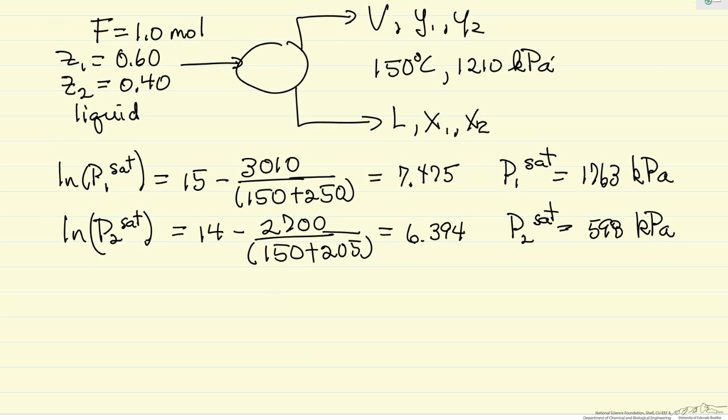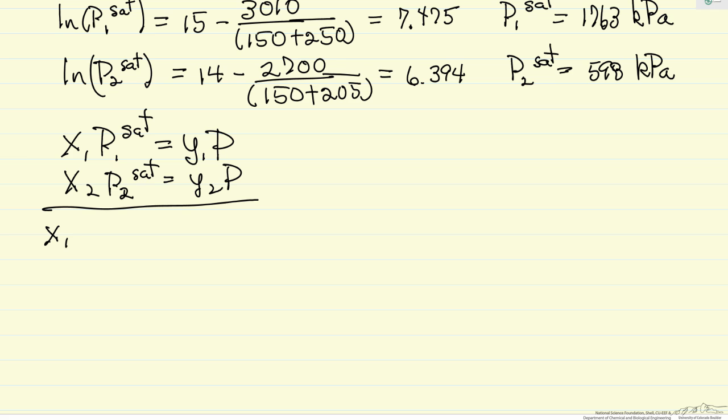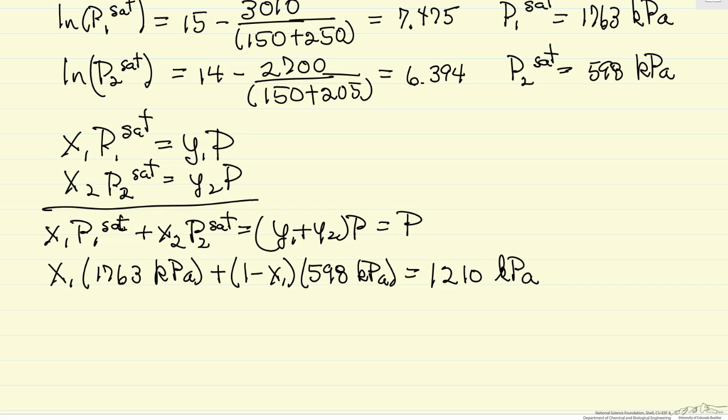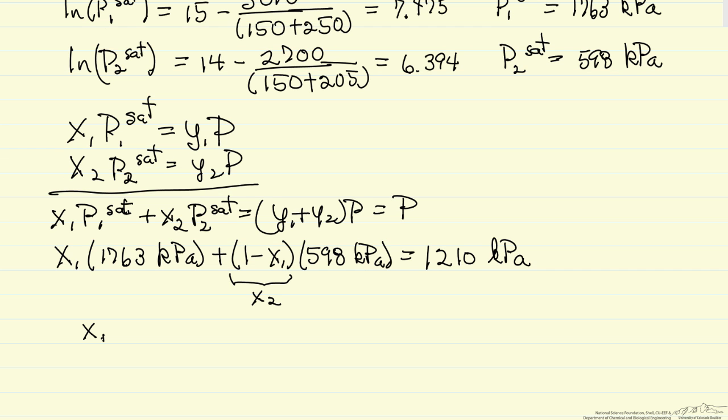Now we have saturation pressures, we can substitute into Raoult's law, which relates the mole fraction in the vapor phase times the total pressure. Let me write them for both components, P2^sat. If I add these together I'm eliminating the mole fractions in the vapor phase, and Y1 plus Y2 times pressure. We know the saturation pressures now, we know the total pressure, we can solve for X1. Note that when I made the substitution, this was X2, so now I have the equation just in X1 that I can rearrange and solve for X1. I've calculated X1, and then of course X2 is such that X1 plus X2 adds to 1.